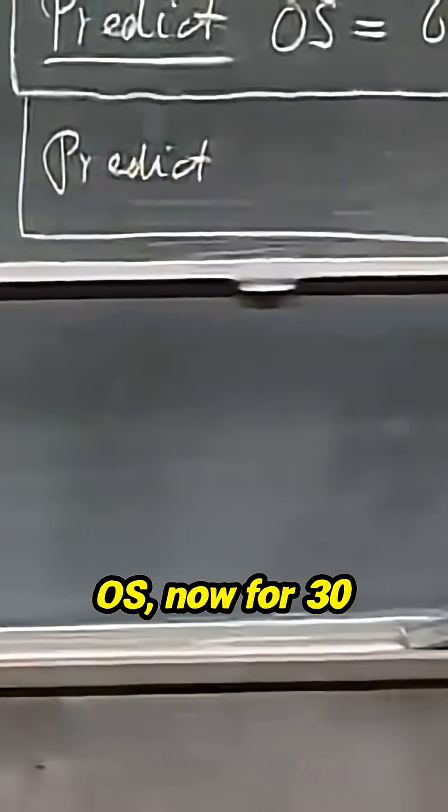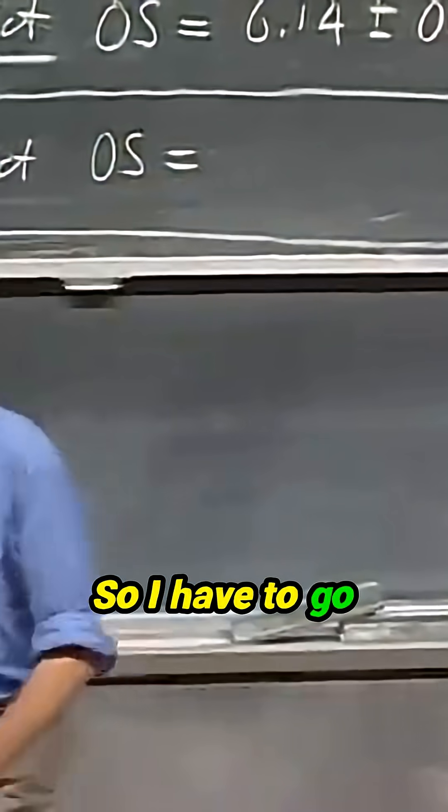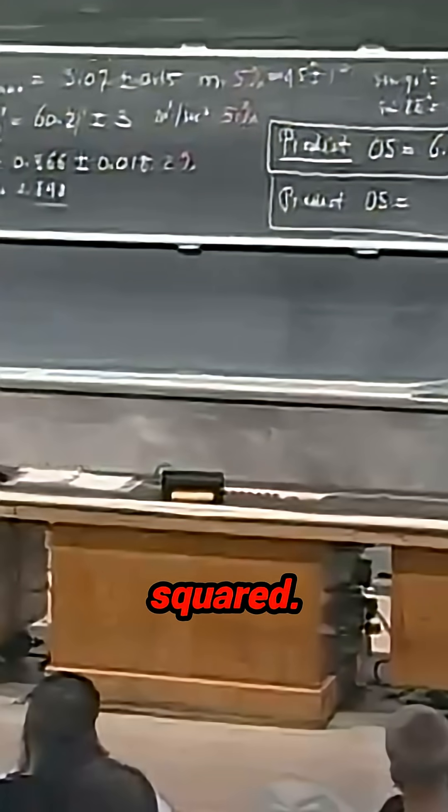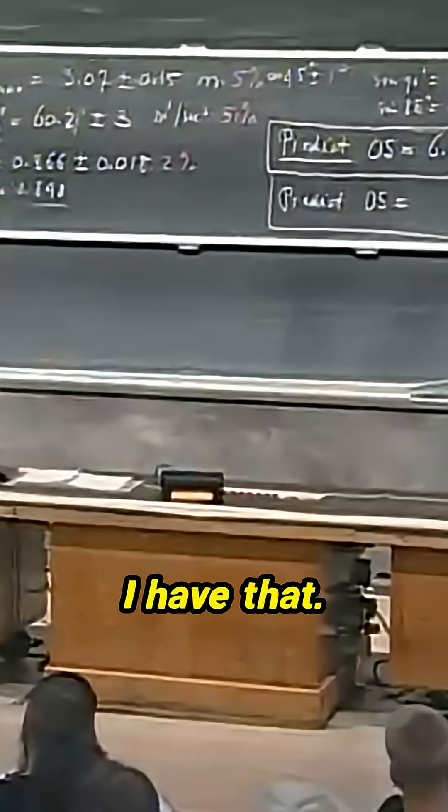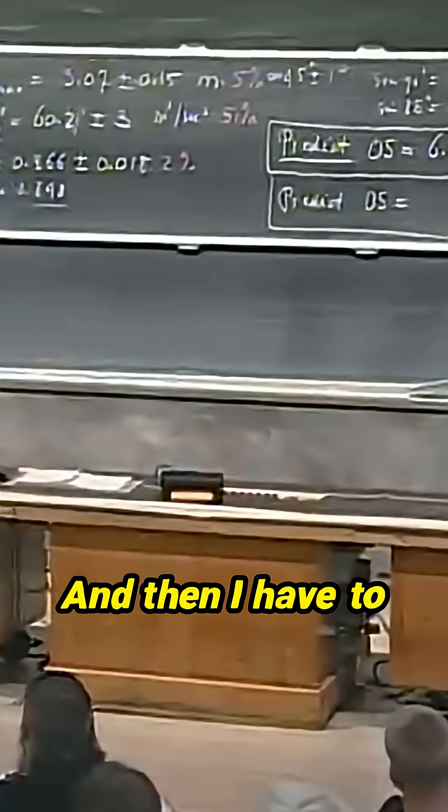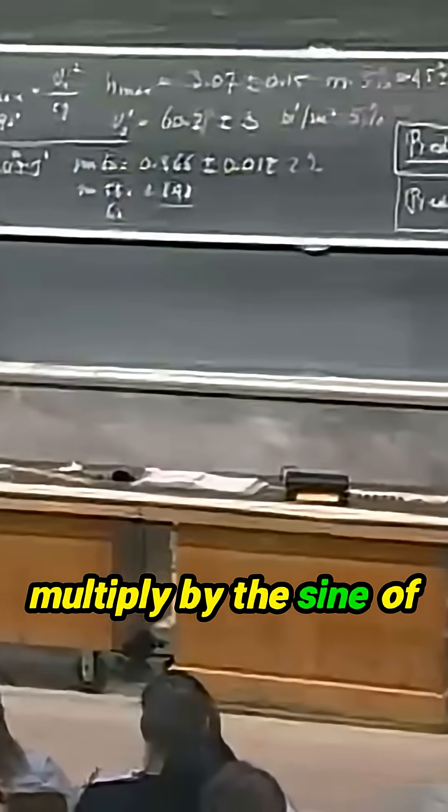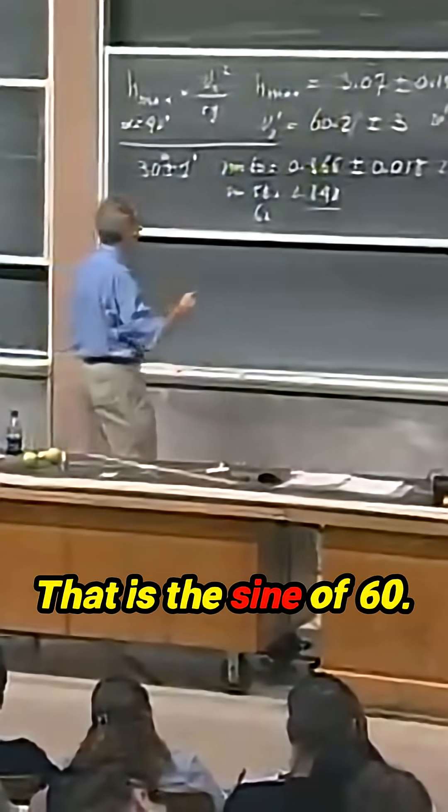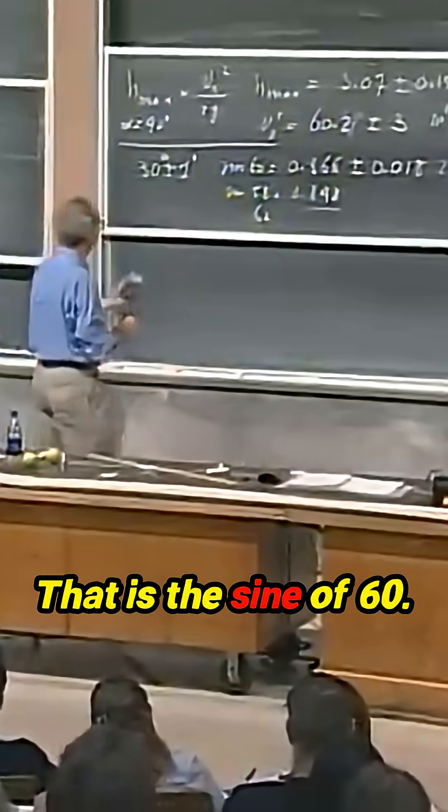OS, now for 30 degrees. So I have to go through v zero squared. I have that. 60.2. And then I have to multiply by the sine of 2 alpha. That is the sine of 60.